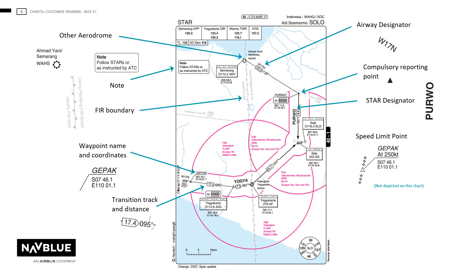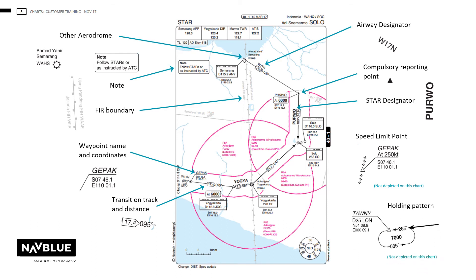Track and distance are shown on the route between each reporting point or fix. Holding patterns will be present like so. We will show the inbound and outbound magnetic tracks of the hold with any altitude present. In this example, the minimum altitude for the hold is 7,000 feet. NavBlue will not show the track bearing if it is the same as the associated procedure line.